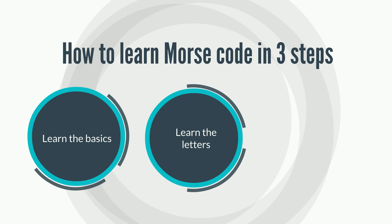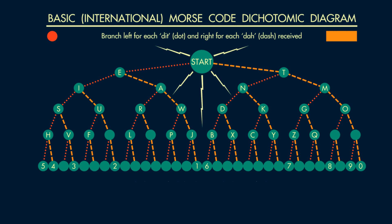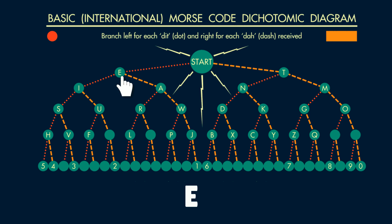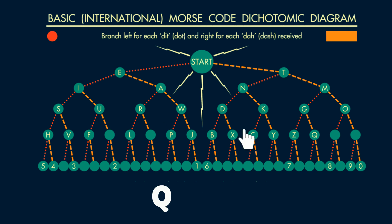Second, learn the letters. You can use a dichotomic search table to make it easier. If the letter starts with a dot, go to the left; otherwise take the right part. For example, E equals one dot, U equals two dots and one dash, and Q equals two dashes, a dot, and a dash.